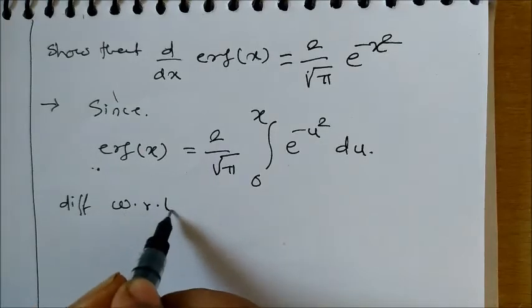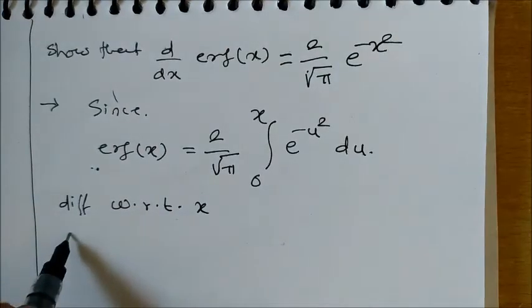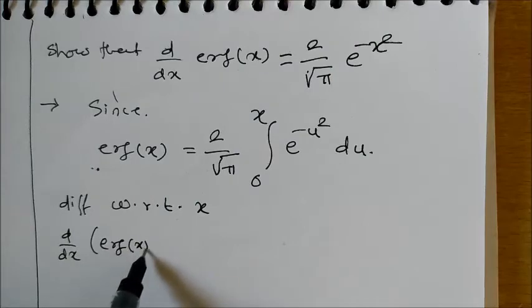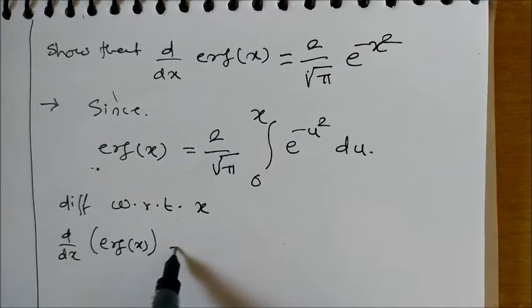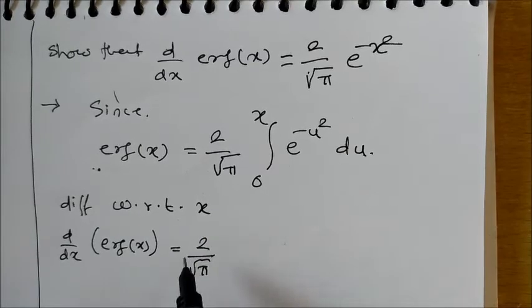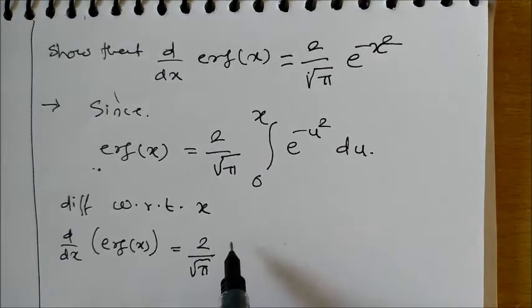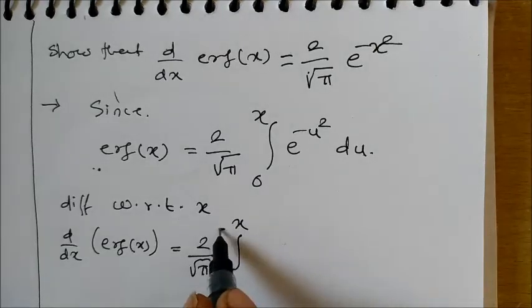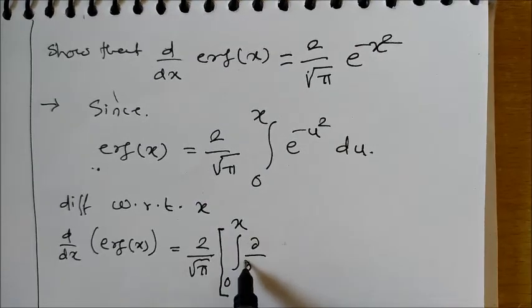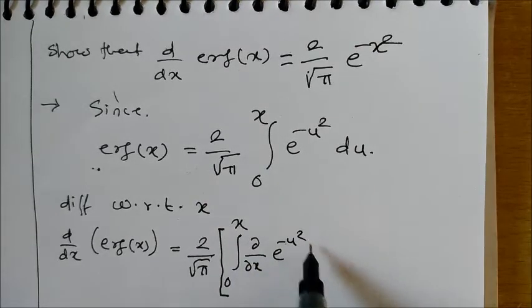d/dx(erf(x)) = (2/√π)[∂/∂x of e^(-u²)] du, then plus